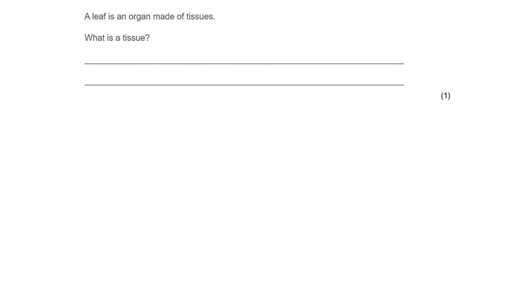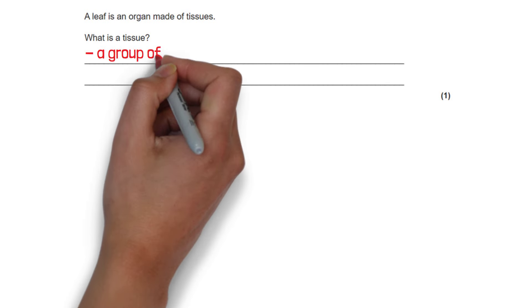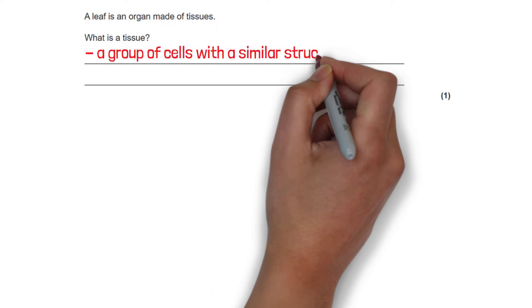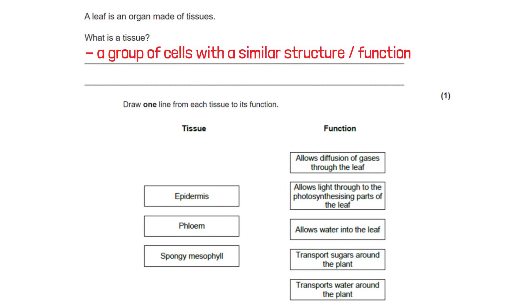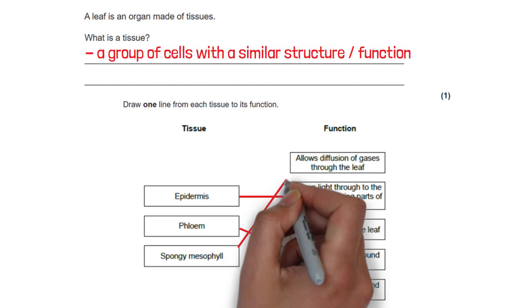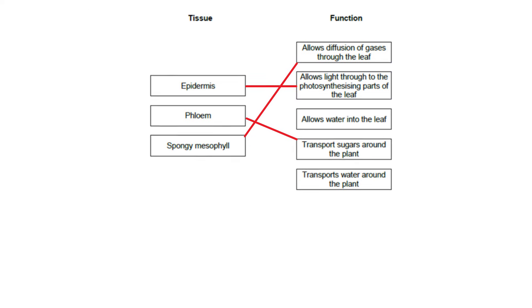The following question asks us what is a tissue and this is just a group of cells with a similar structure or function. Draw one line from each tissue to its function. We have the epidermis, phloem and spongy mesophyll layer. In this question it's talking about the upper epidermis and this allows light through to the photosynthesizing parts of the leaf, aka the palisade mesophyll layer we spoke about in a previous question. The phloem transports sugars around the plant and the spongy mesophyll layer allows diffusion of gases through the leaf.